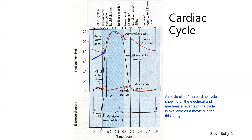When left ventricular pressure reaches aortic pressure — that's where you measure diastolic pressure, in this case 80 millimeters of mercury — the aortic valve, being a passive valve, is forced open under pressure from the left ventricle. At this point, there is rapid ejection of blood from the left ventricle into the aorta, known as the rapid ejection phase. Blood flows rapidly out of the left ventricle into the aorta and down the arterial tree.